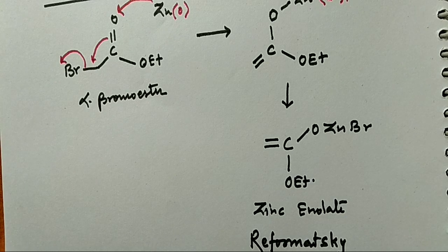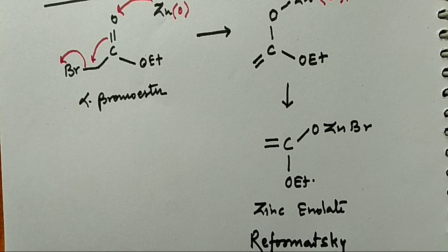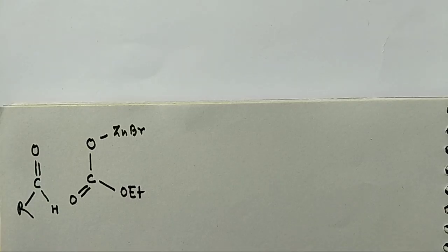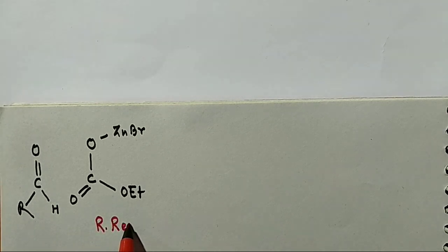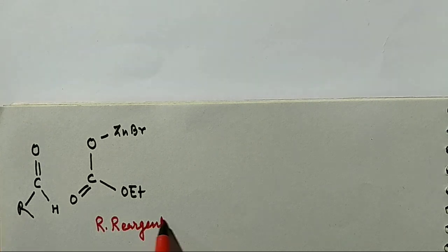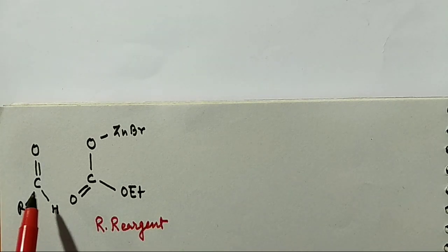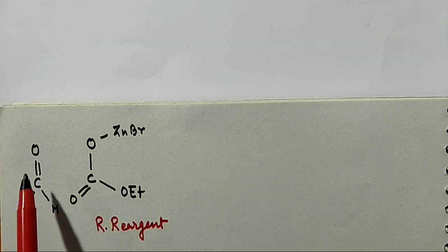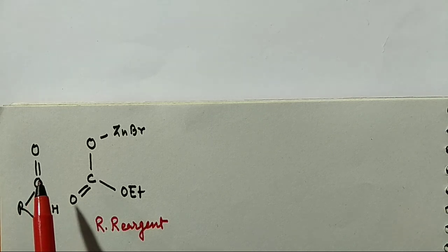Now this Reformatsky reagent reacts with aldehyde or ketone and forms a cyclic transition state, which undergoes hydrolysis to form beta-hydroxyester. This is the Reformatsky reagent — the zinc enolate — and it attacks on the carbonyl carbon of the aldehyde or ketone.